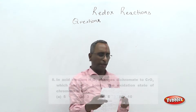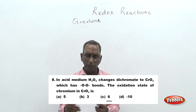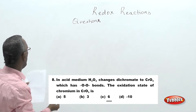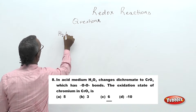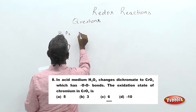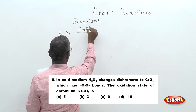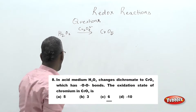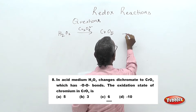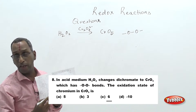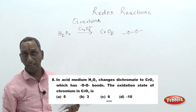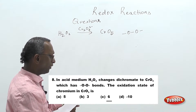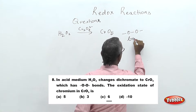The next question reads: in acid medium, hydrogen peroxide (H₂O₂) changes dichromate (Cr₂O₇²⁻) to chromium pentoxide (CrO₅). This product has peroxide linkage — that is, an oxygen-oxygen linkage. Peroxide means one more oxygen: 'per' means one in excess, so there are two oxygen atoms in this type of linkage.